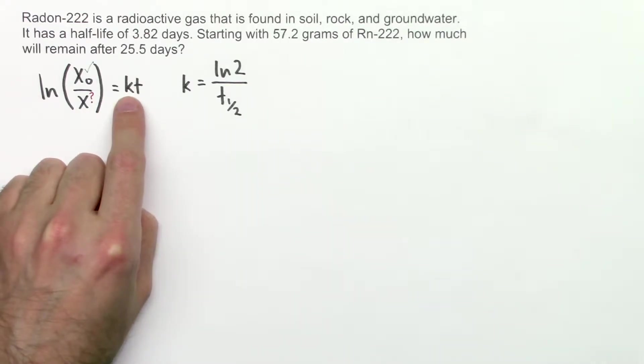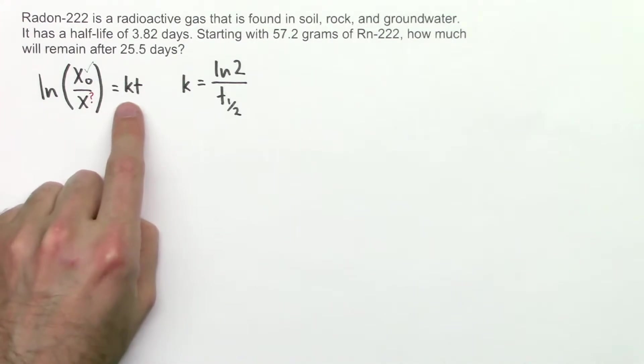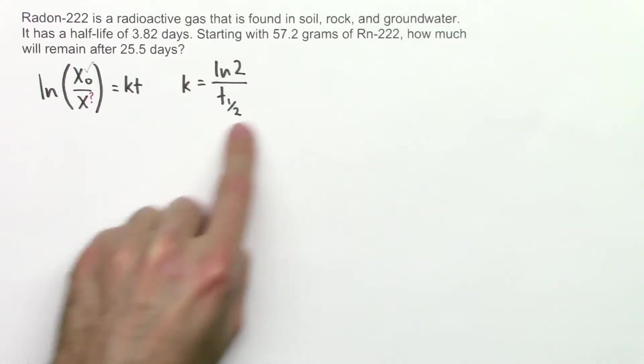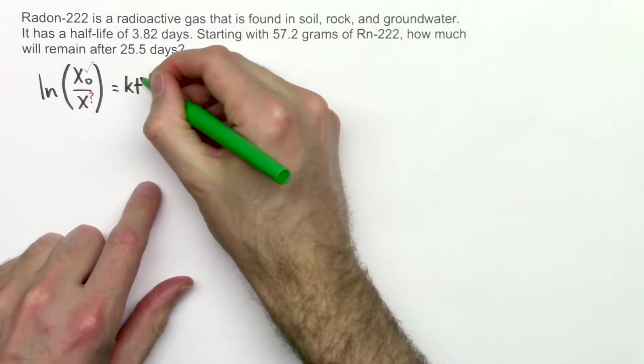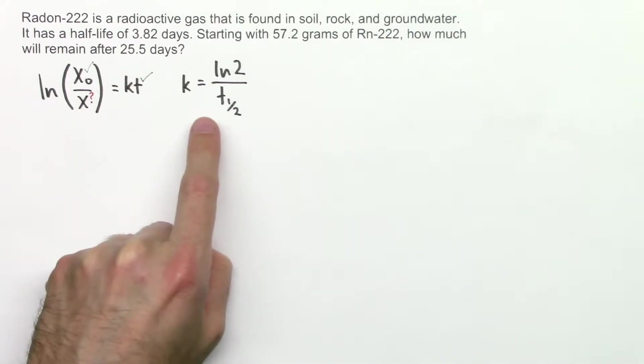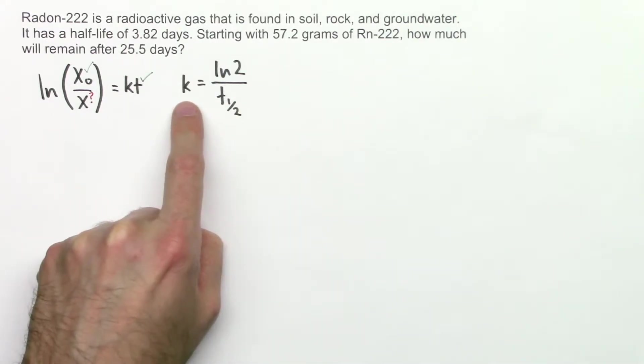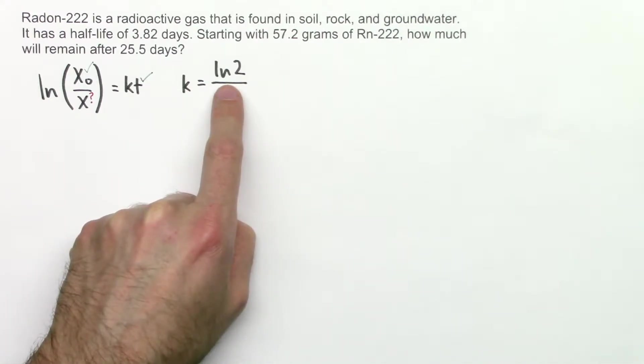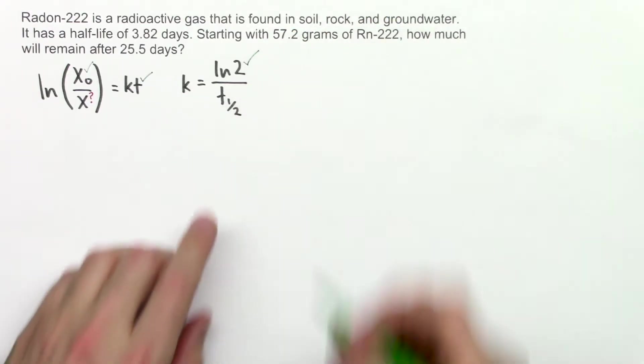Now k. k is a constant that's unique for each different substance. We're not going to get to it right now because there's an equation that has to do with k over here. t. t is the amount of time that goes by. We know that. We're given that it's 25.5 days. Now here's the other equation that we use. We use these two equations together. This tells us how to calculate k. So ln2, this is just a number that we can easily calculate.